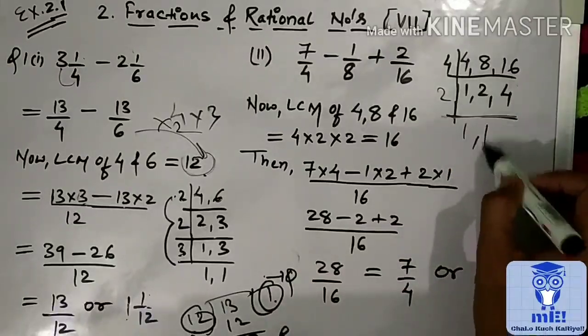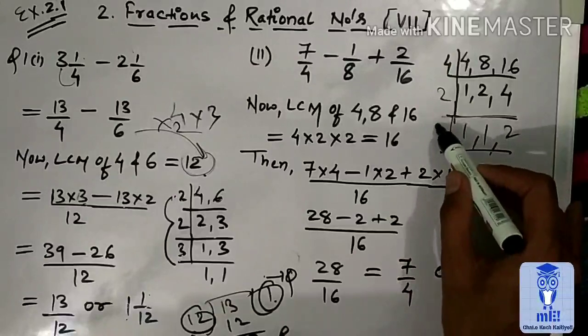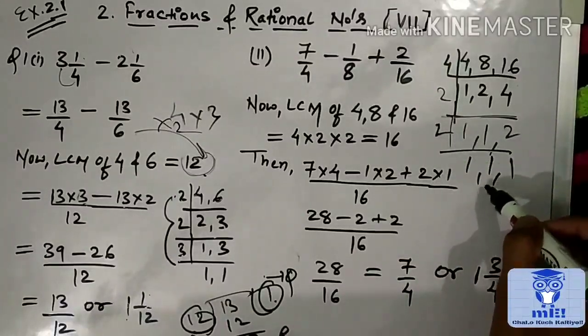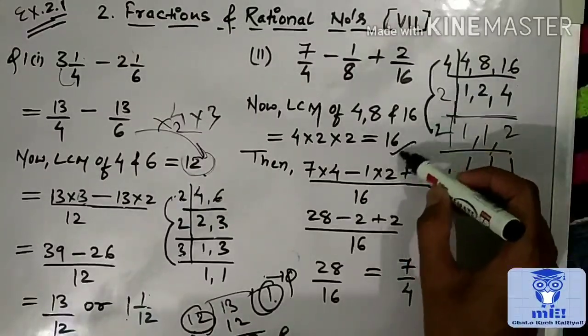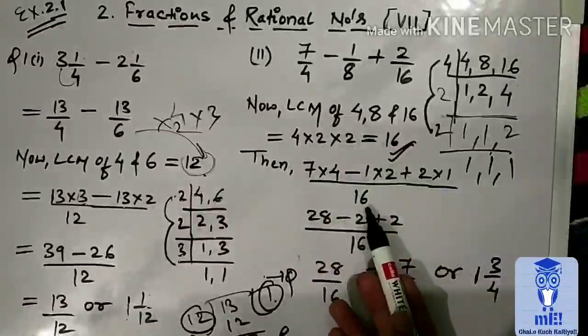Again, 2, 1 is 2. 2 is 4. Next, 2. This one as it is. This one as it is. 2, 1 is 2. It means, LCM is 4 into 2 into 2. Means, how much? Number is 16. Next, LCM of this three numbers is 16.